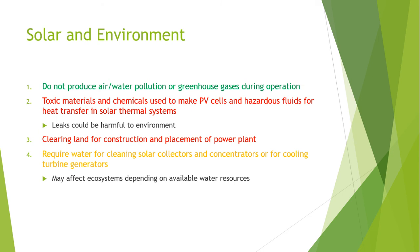For example, in 2011, fluoride concentration levels in a main river in Haining city, eastern China, were more than 10 times higher than permitted by law, killing many fish and raising concerns about human health. Another source of pollution is the careless disposal of used solar panel equipment, including batteries which contain lead, cadmium, antimony, and sulfuric acid, all leading to huge environmental pollution.